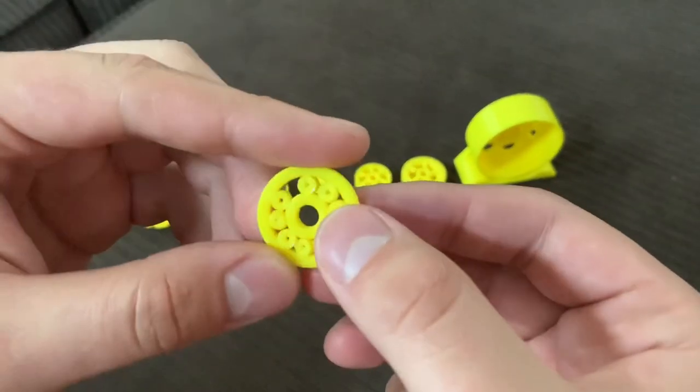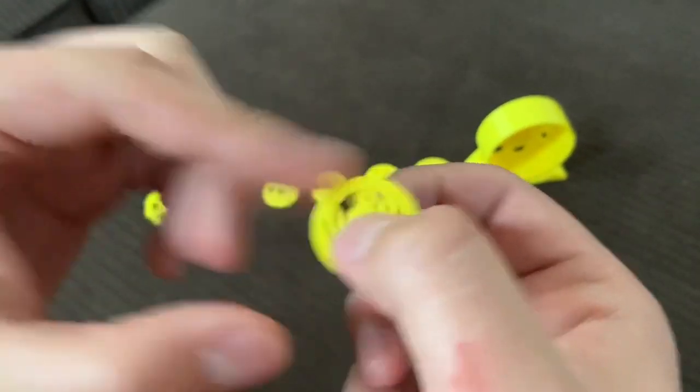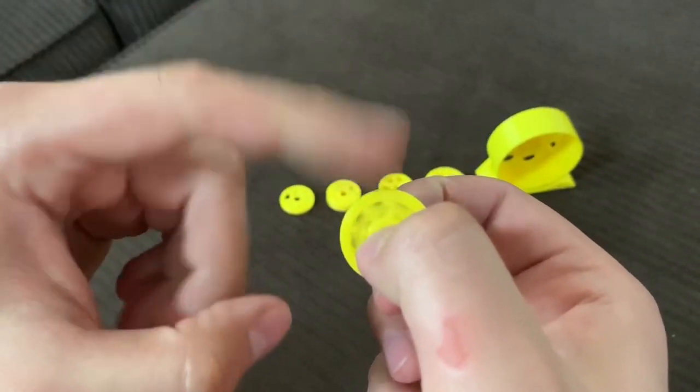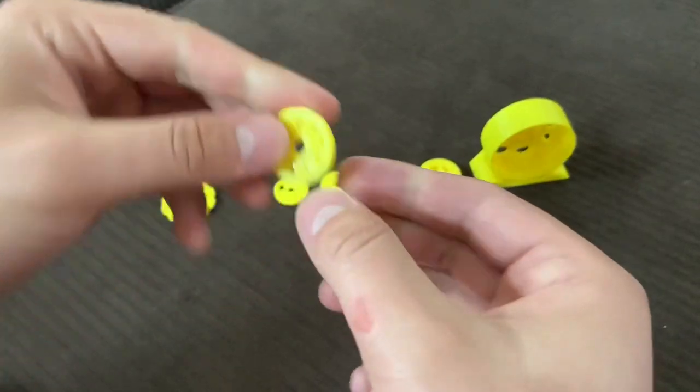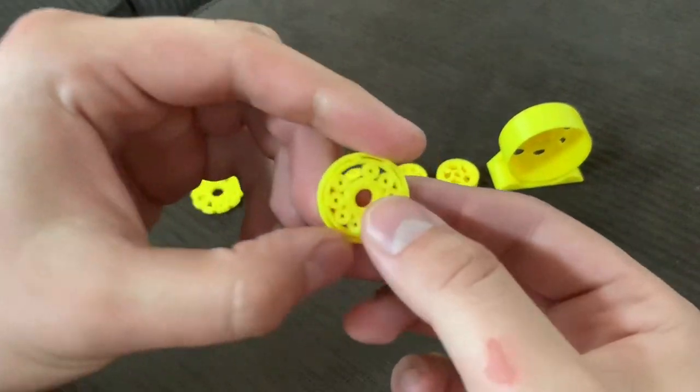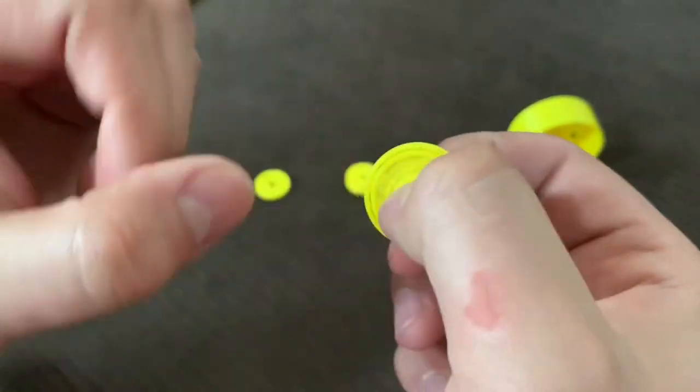Going on to the next one, this is the perfect bearing for a 0.4 millimeter nozzle. If you go any smaller it might be a bit hard, but with this size it works great, spins freely. You could probably loosen it up a little bit more for even better performance. This is the next version. I just reinforced the walls a little bit. It's just as good.